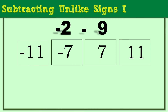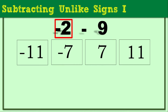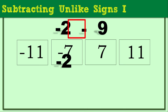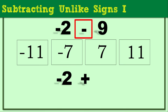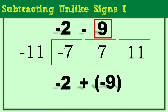How about negative 2 minus 9? Using Keep, Change, Change: we keep negative 2, change to plus, and change positive 9 to negative 9. So it gives us negative 2 plus negative 9. The answer is negative 11.